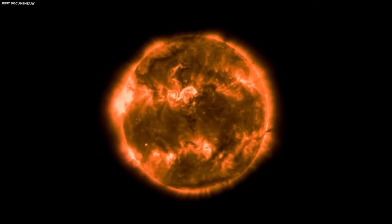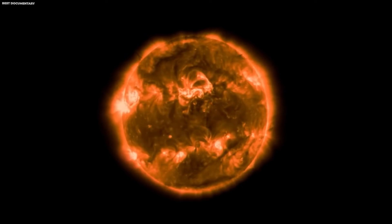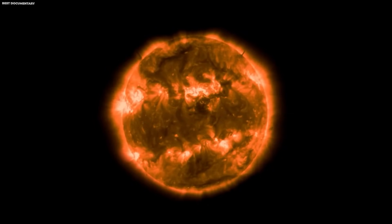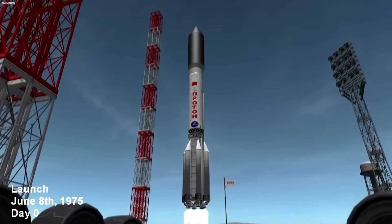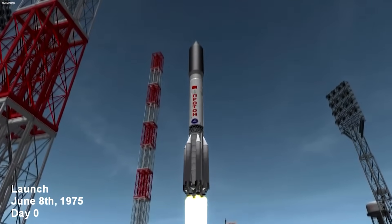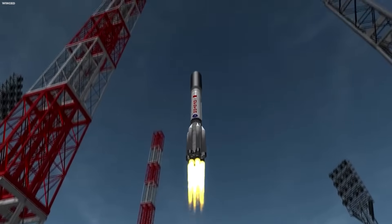In 1967, Venera 4 made history as the first spacecraft to take readings of another planet's atmosphere. It found that Venus's constant greenhouse effect is caused by a high concentration of carbon dioxide in the atmosphere.